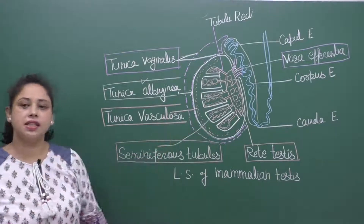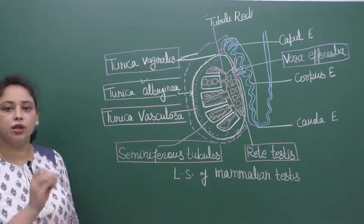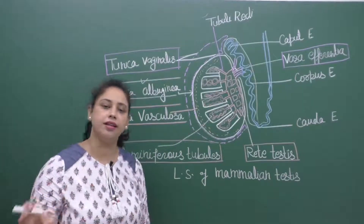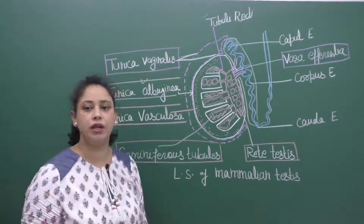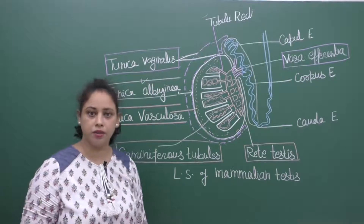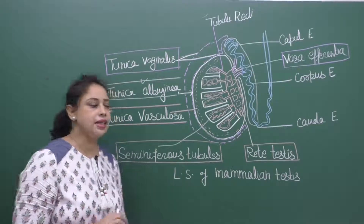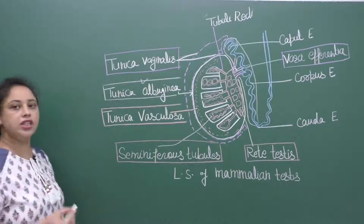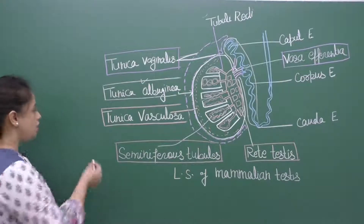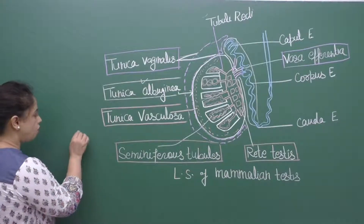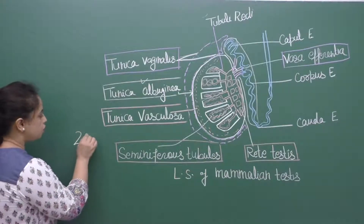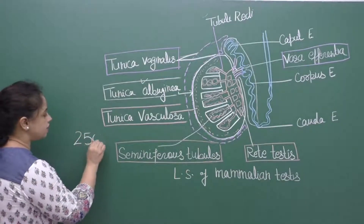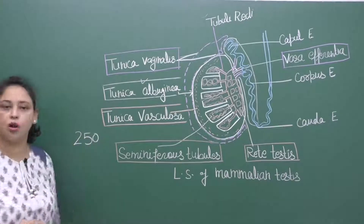Each testes contains 200 to 300 testicular lobules. NCERT mentions that each testes consists of 250 testicular lobules.